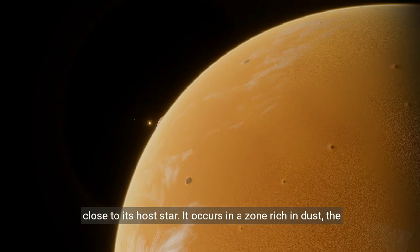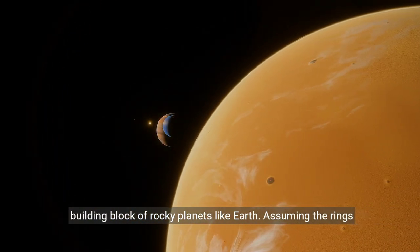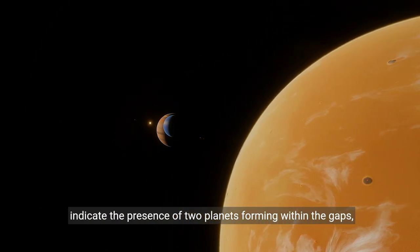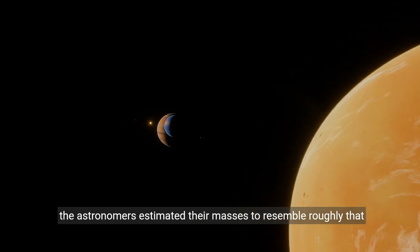It occurs in a zone rich in dust, the building block of rocky planets like Earth. Assuming the rings indicate the presence of two planets forming within the gaps, the astronomers estimated their masses to resemble roughly that of Jupiter.